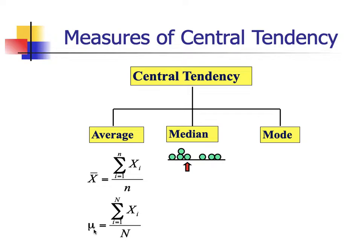If the data is taken from the population, the numerical characteristics used to describe those values will be referred to as a parameter. The parameter used for the population mean is denoted by the Greek letter mu, given by the summation of all x sub i's, where i ranges from 1 up to N. This notation below and above the summation is referred to as the index of summation. We get the sum of all data values in the population, then divide it by the population size, denoted by capital N.